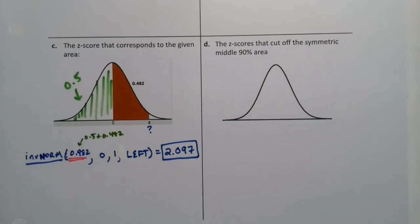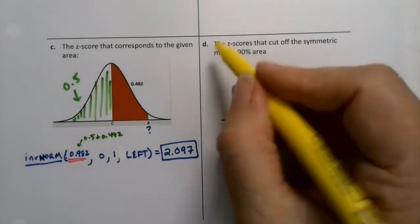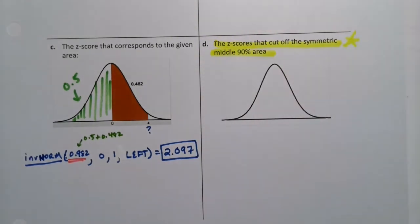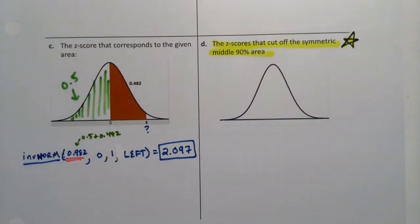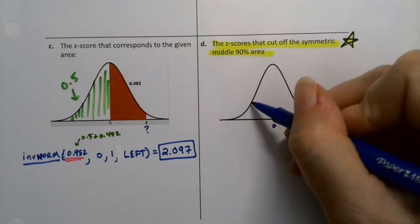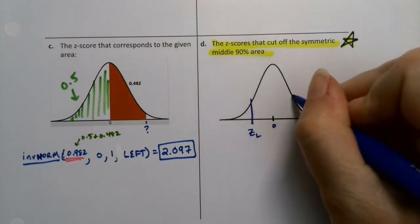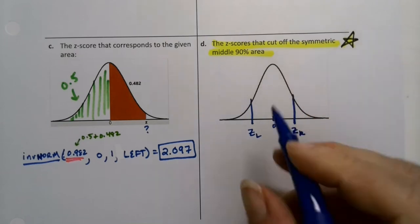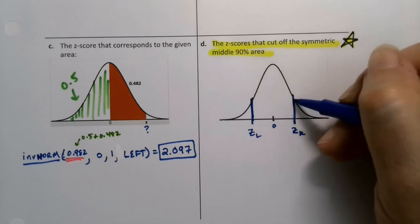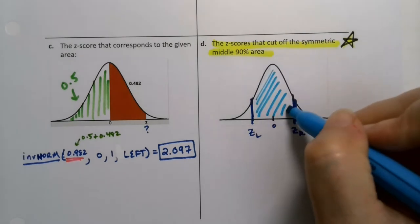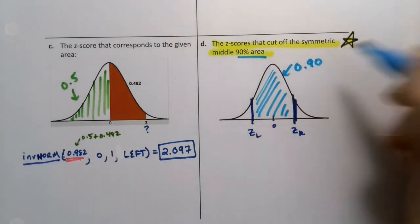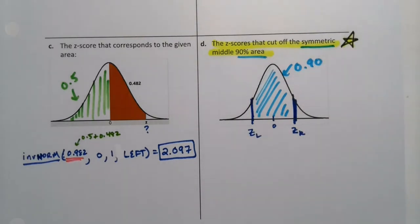Now for ones you're going to use in later portions of the course — letter D is your friend. You are going to do this one a lot, so star it and highlight it. This is going to be a frequent problem in chapters 9 and 11. Notice it's a symmetric middle 90%. That means zero is in the middle, one z-score on the left, a companion z-score on the right, and they're the same distance away. That middle is worth 90%.